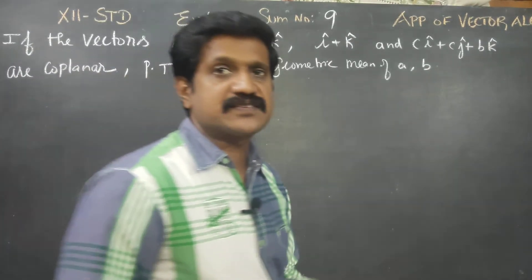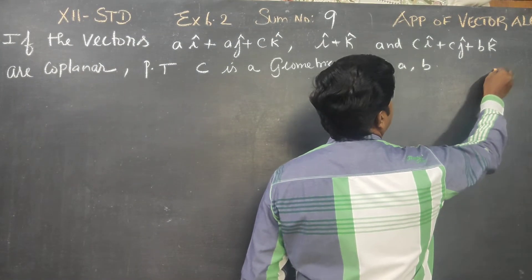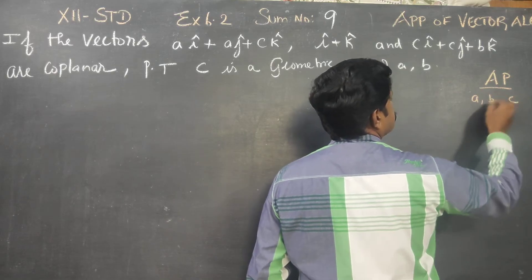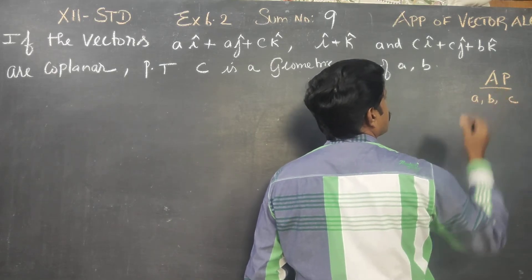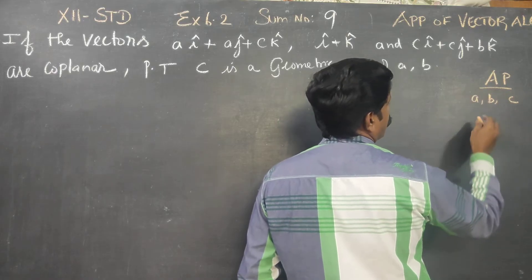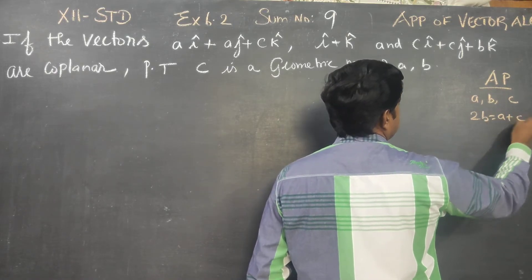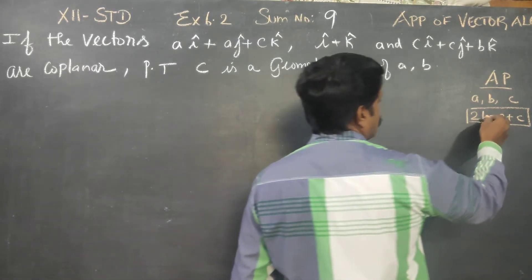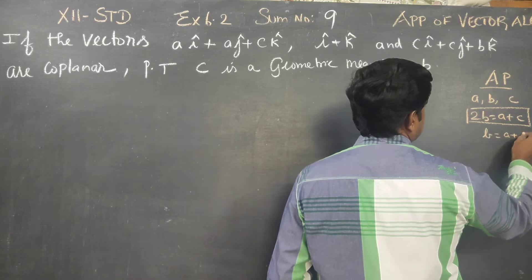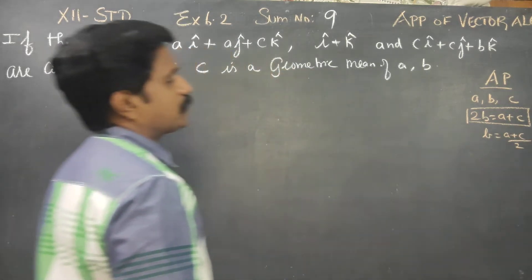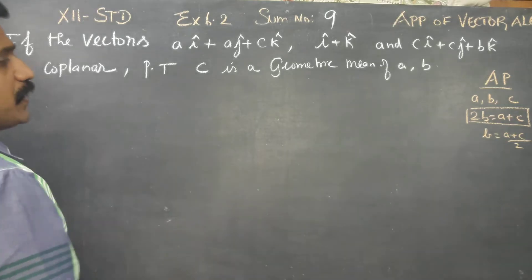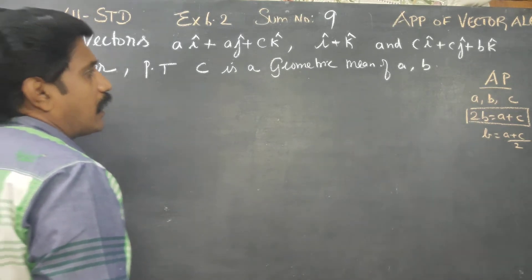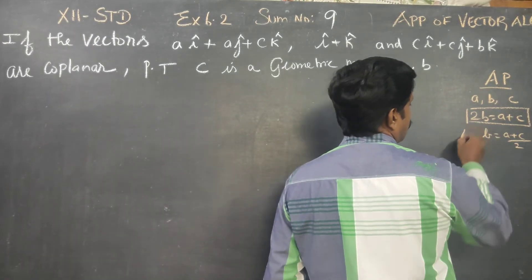Just a revision from 10th standard: arithmetic progression. For A, B, C, the condition for arithmetic progression is 2B equals A plus C. This is the arithmetic mean: B equals (A plus C) divided by 2.